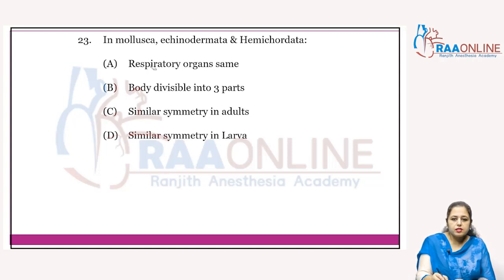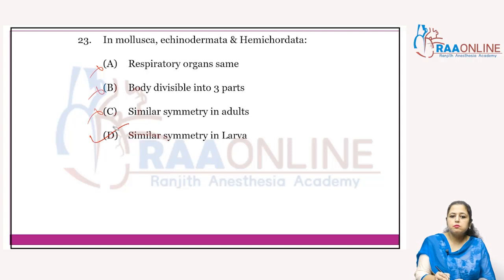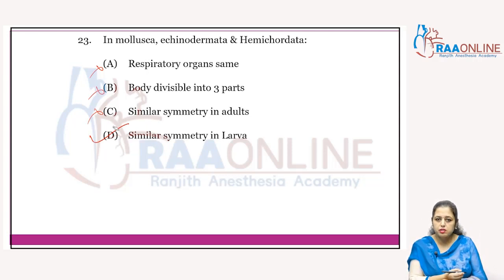In Mollusca, Echinodermata, and Hemichordata: respiratory organs are the same — no, they are not. Bodies are divisible into three parts — no. Similar symmetry in adults — no. Similar symmetry in larvae — larval symmetry is the same, but adult symmetry differs. Answer is D.